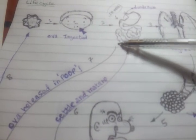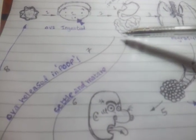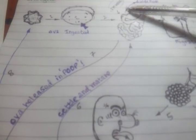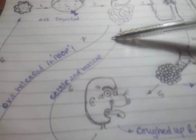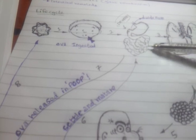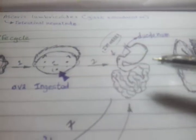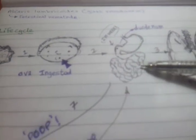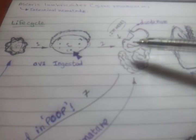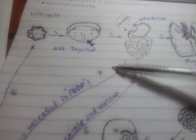After they are swallowed, they go through the trachea, then move from the trachea to the esophagus, and then to the small intestines. There they settle, mature, and release thousands and thousands of eggs, which are usually found in feces.